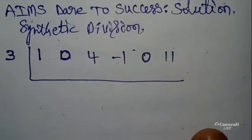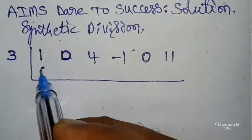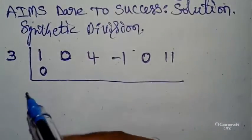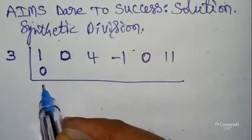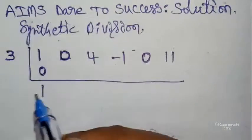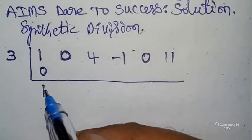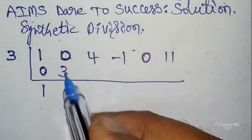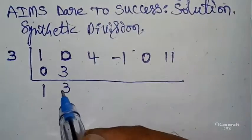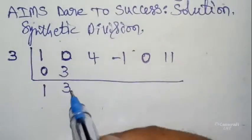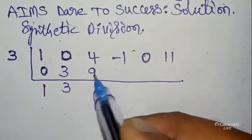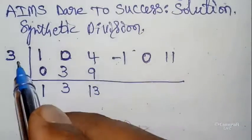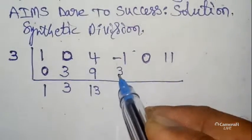In the first place write 0. Next, addition: 1 + 0 = 1. Cross multiply: 1 × 3 = 3, write here. Next addition: 3 + 0 = 3. Cross multiply: 3 × 3 = 9, write here. 9 + 4 = 13. Cross multiply: 13 × 3 = 39, write here.